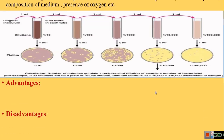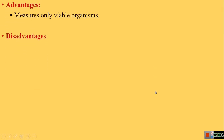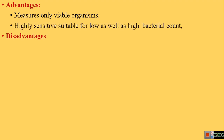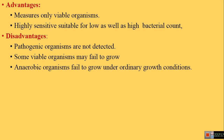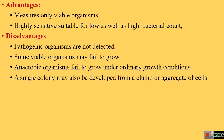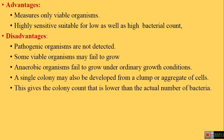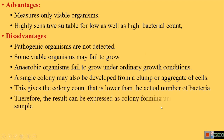The advantages of SPC are: it counts only viable organisms, and it is a highly sensitive method suitable for samples with both low and high bacterial counts. The disadvantages include: pathogenic organisms are not detected; some viable organisms fail to grow under given conditions, so it is not a total viable count; anaerobic organisms fail to grow under ordinary conditions; and a single colony may develop from a clump of cells, giving a colony count lower than the actual number. Results are therefore expressed as colony forming units (CFU) per ml rather than number of organisms per ml.